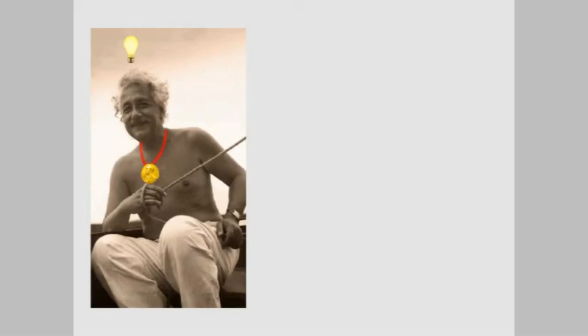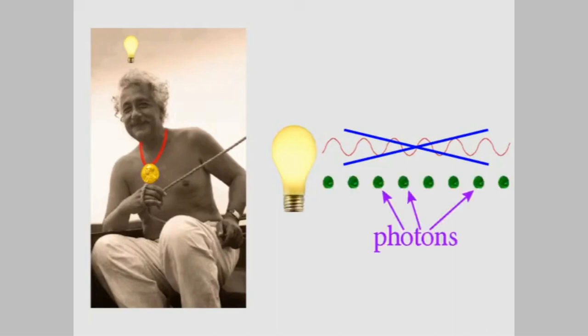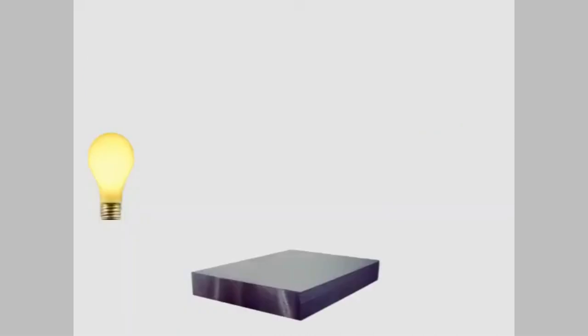So why does all that happen? Explaining it was one of Einstein's biggest successes. Albert Einstein said, suppose instead of thinking of light as a wave, we imagine that it's a particle, which he called a photon. In that case, when you make a light brighter, what that means is you're emitting more photons, more light. So the photons hit the metal more often, and that's why they knock off more electrons. But each one still has the same speed that it usually does. That's exactly what we see when we make the light brighter.